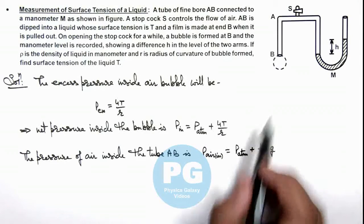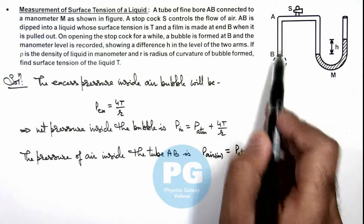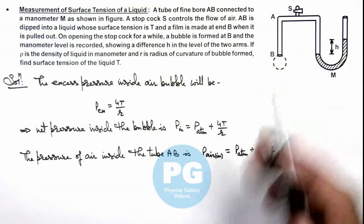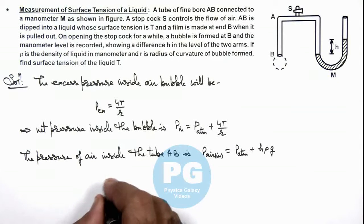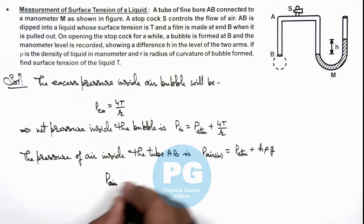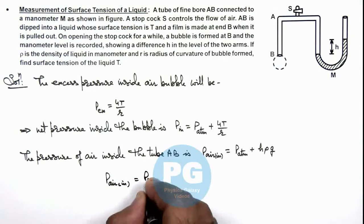Now as the pressure of air inside the tube must be equal to the pressure inside the air bubble, we can write pressure of air inside the tube must be equal to pressure inside the bubble.